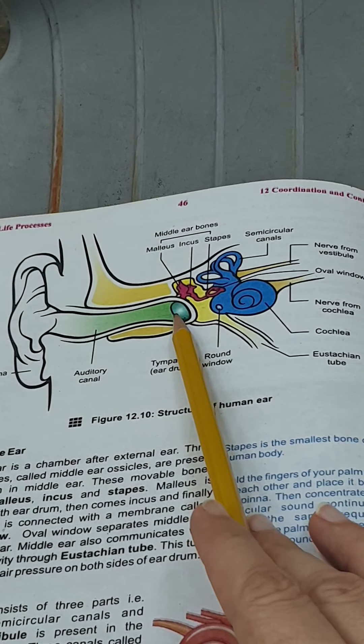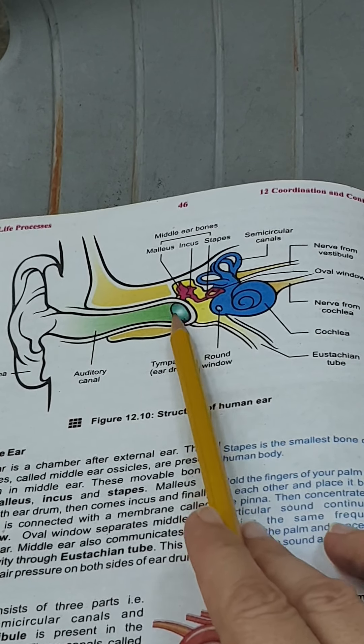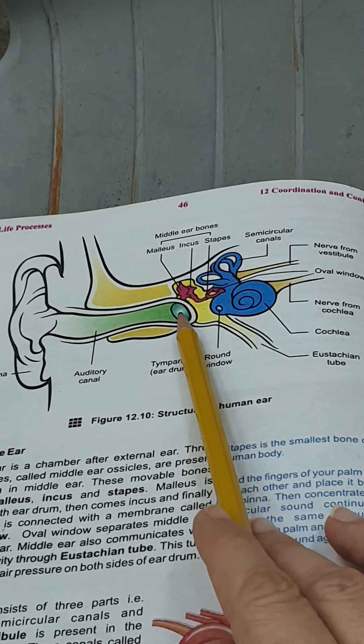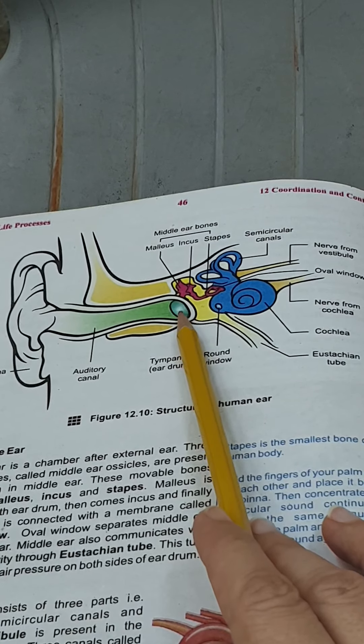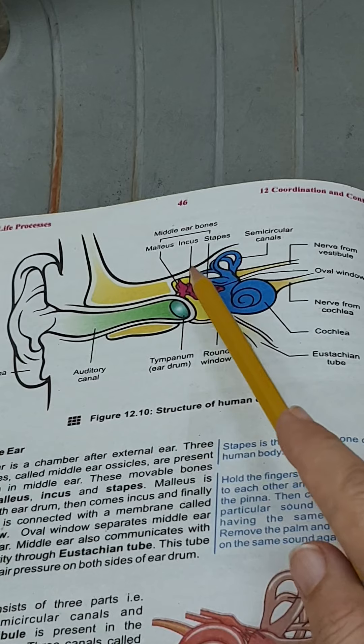At the end, the outer ear consists of a membrane which is known as tympanum or eardrum, and this eardrum is used for the production of vibration. Next is our middle ear.